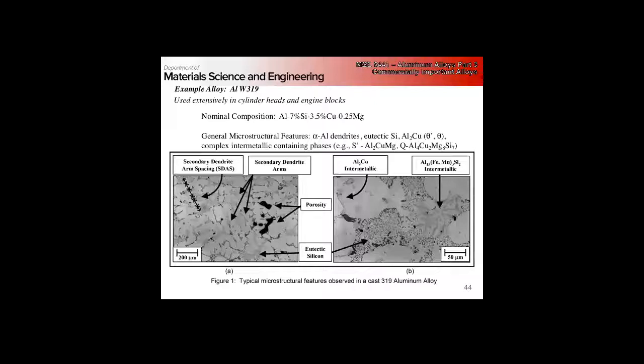This is 200 microns here, and what do we see? This is largely a dendritic structure. Here are our secondary dendrite arms. Looking at dendritic microstructures is sort of a talent. We've got the structure of a dendrite in 3D. The growth follows thermal gradients of the primary dendrites, and then the secondary dendrite arms are coming off. So you've got this complicated dendritic shape in 3D, then we're taking a random slice through it in 2D.